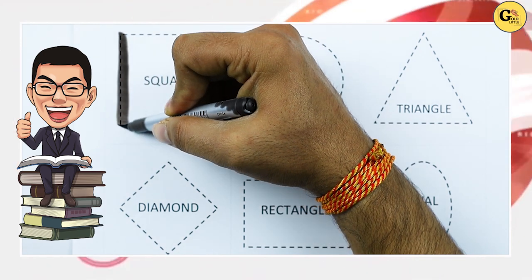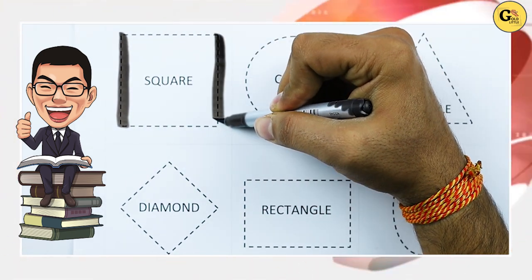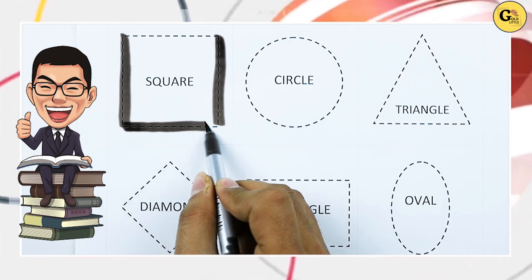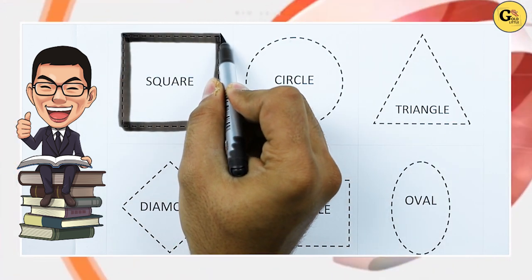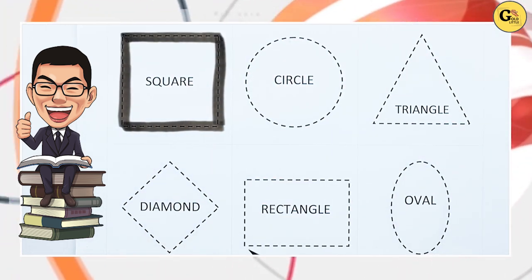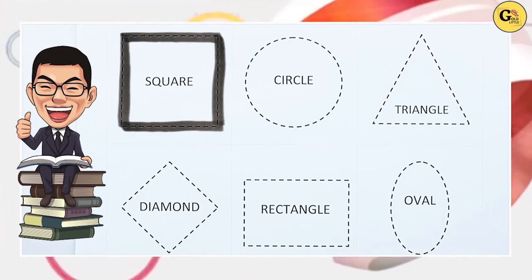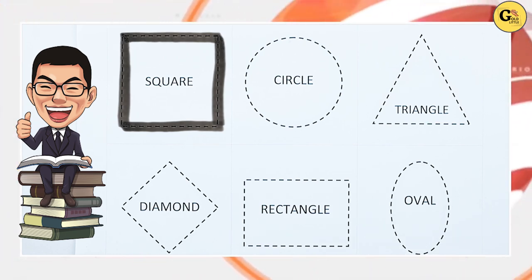One line, two line, three line, four line. Two slipping lines, two standing lines. It's called square with green color.